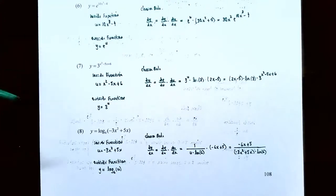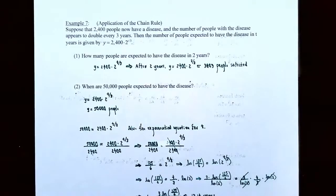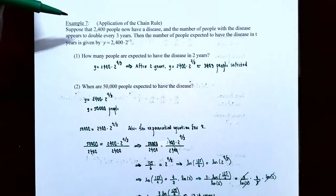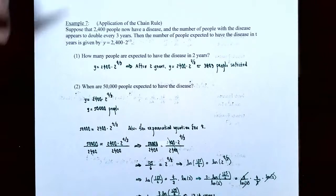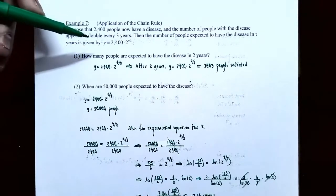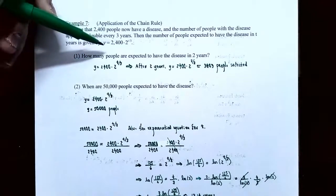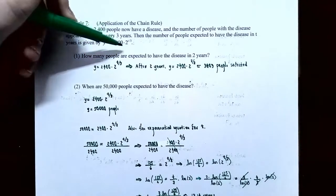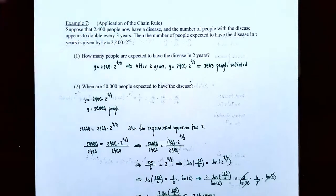Now let's finish with an application of the chain rule. Example seven: suppose 2,400 people now have a disease and the number of people doubles every 3 years. The number of people expected to have the disease in t years is y = 2,400 · 2^(t/3).